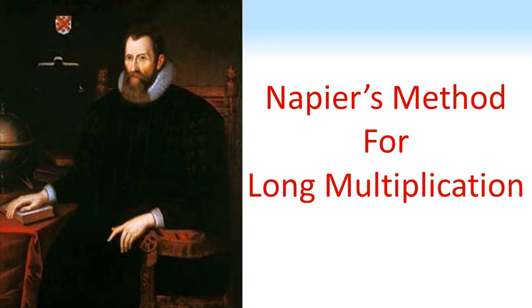Napier's method for long multiplication. We want to multiply 62 by 375, so to use Napier's method we begin like this.